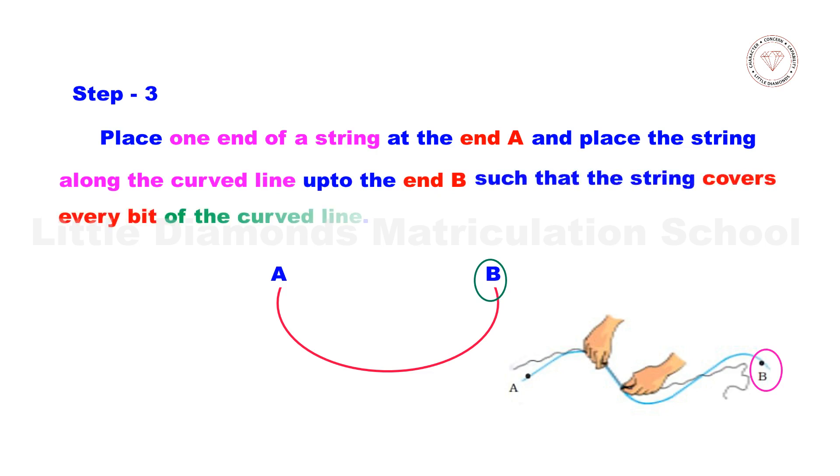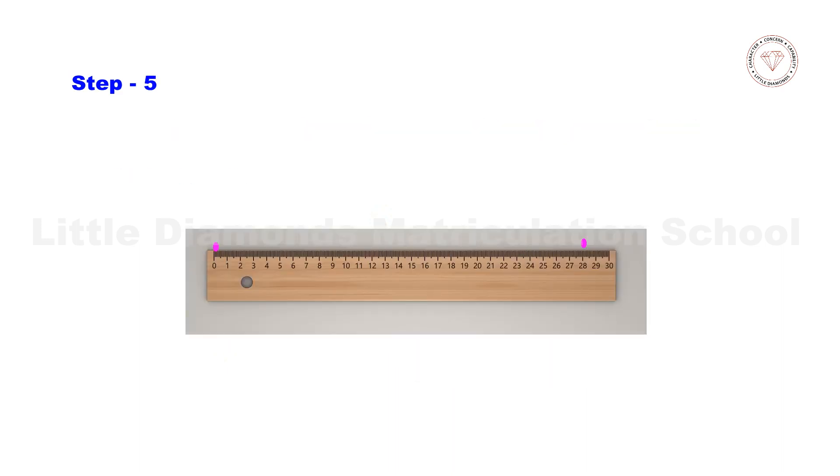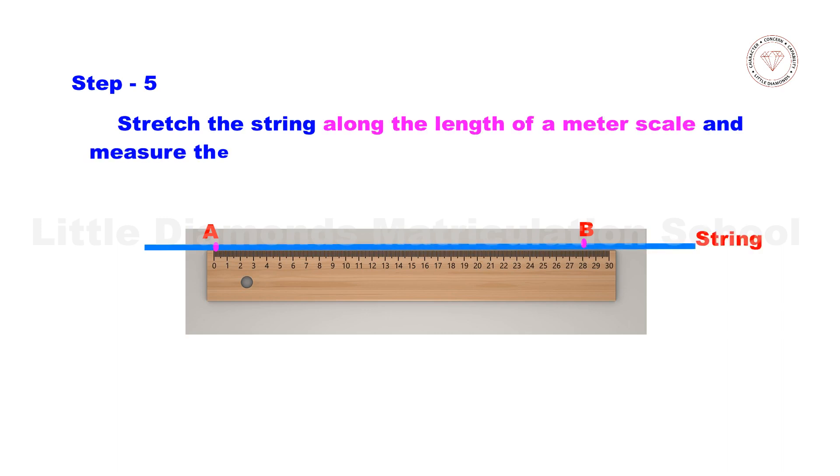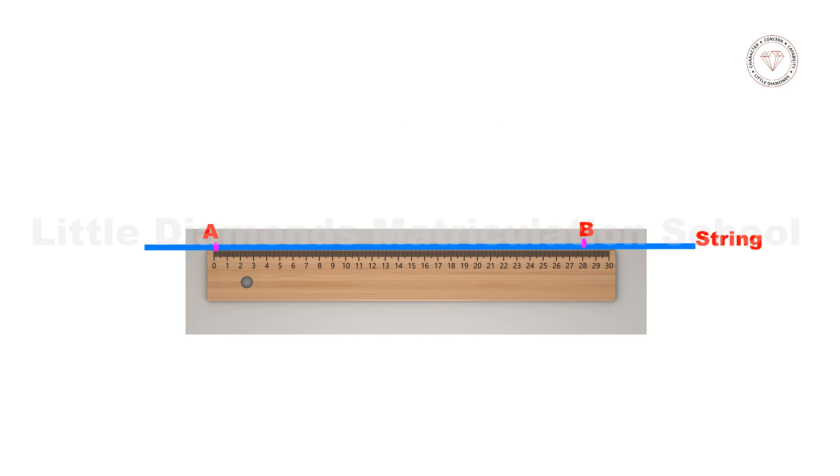Step 4 - mark the point where the curved line begins and ends on the string. Step 5 - stretch the string along the length of a meter scale and measure the distance between the two markings of the string and note the reading on the scale without any parallax error. This will give you the curved length of the banana.